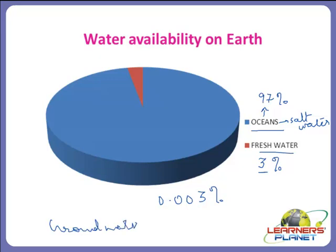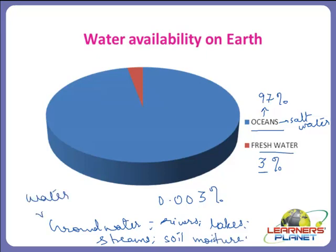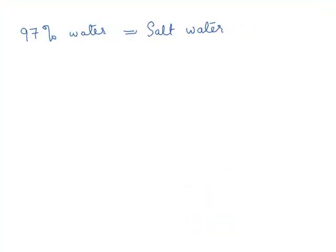Only about 0.003% of fresh water is easily available to us as groundwater. Besides groundwater, fresh water is also available in the form of rivers, lakes, streams, soil moisture, and water vapour. This is why our earth is called the water planet.